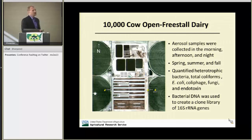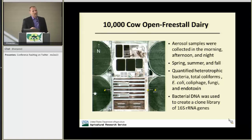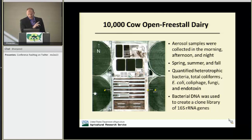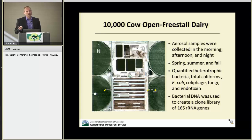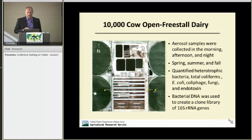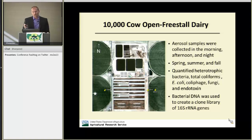If the wind was coming from the east, we just swapped our locations. I also set some samplers out while they were spray-irrigating with dairy wastewater. We quantified heterotrophic bacteria, total coliforms, E. coli, coliphage, fungi, and endotoxin. I also extracted bacterial DNA and created a clone library so I could identify what was airborne.